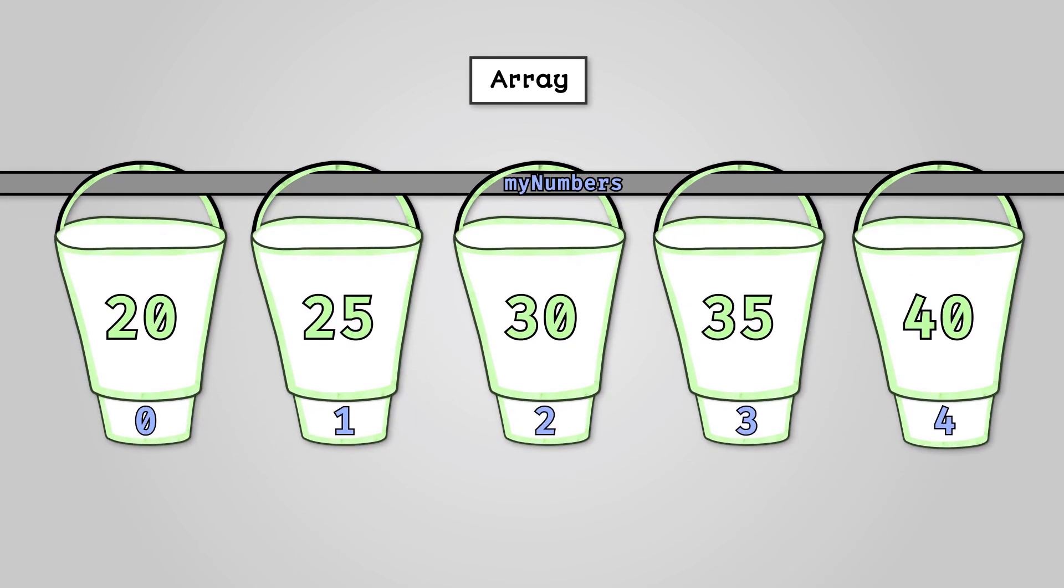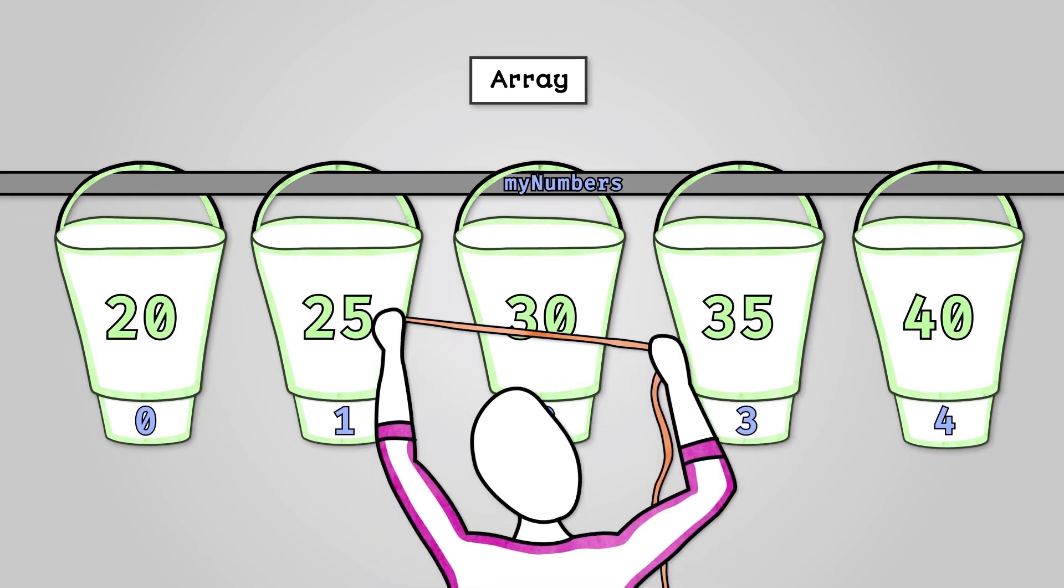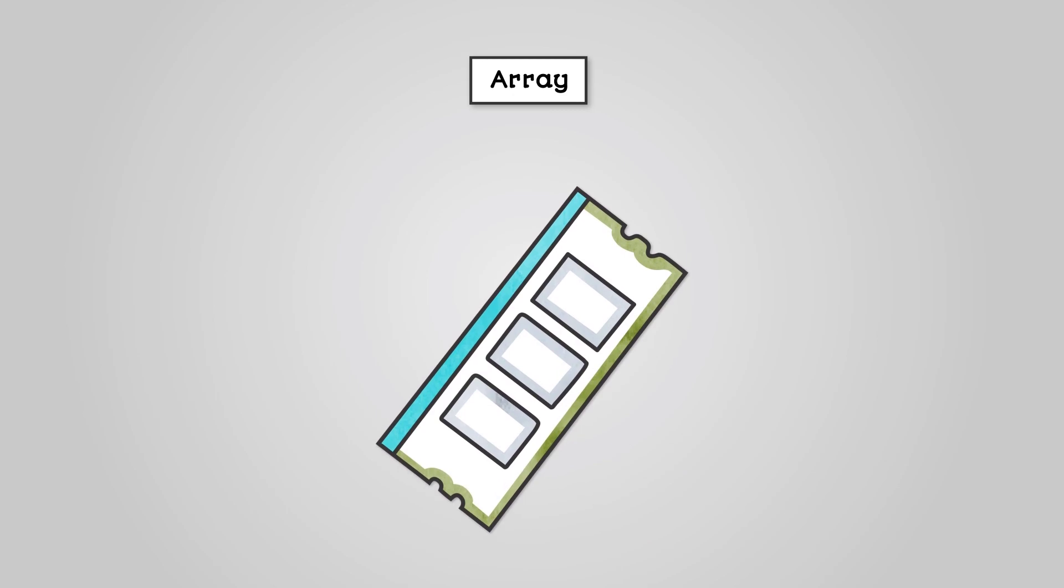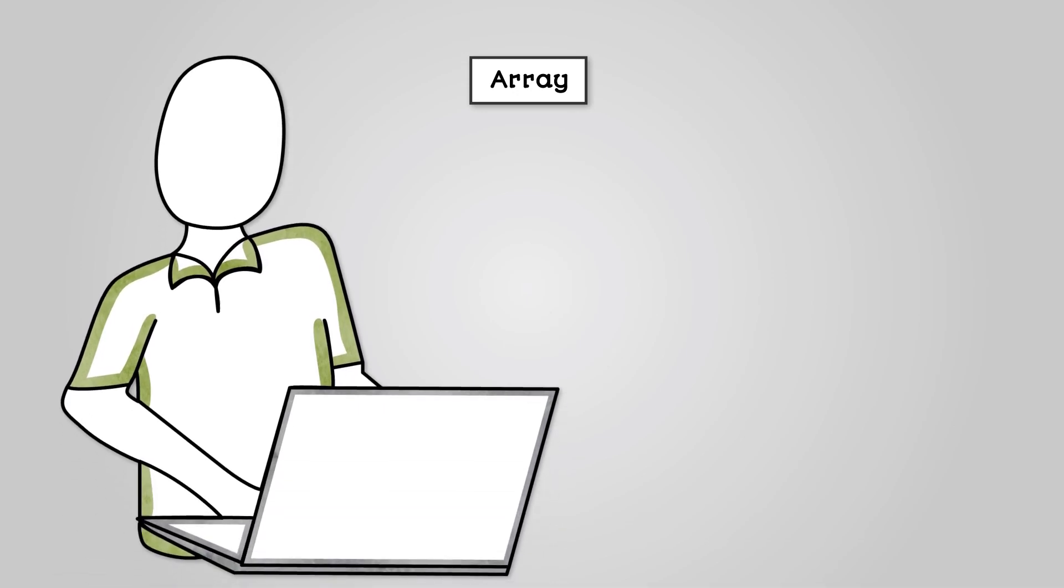So arrays are data structures used for storing collections of data. Arrays once declared are of a fixed size. Arrays can only hold items of the same data type. Each array variable is called an element. You access elements by their index. The array is stored in contiguous memory, i.e. registers next to each other in RAM. You can loop through and print out the contents of an array with a for loop.